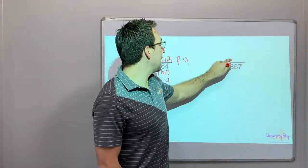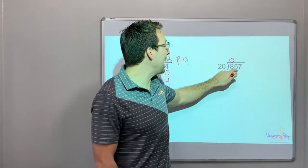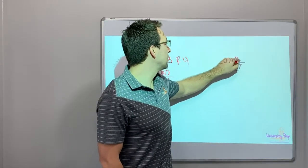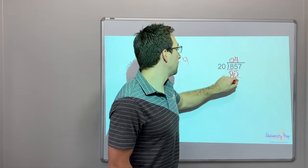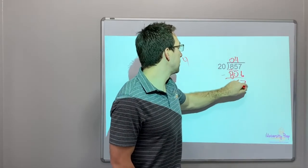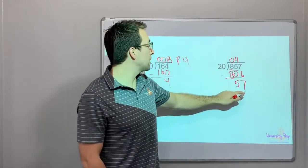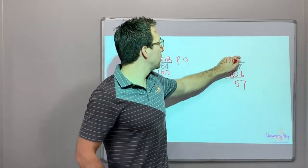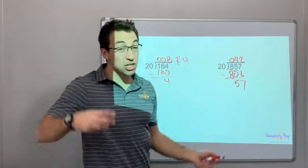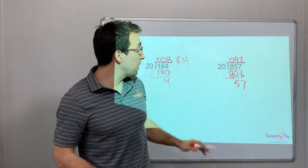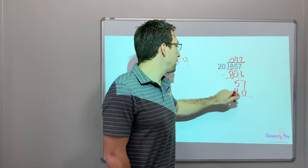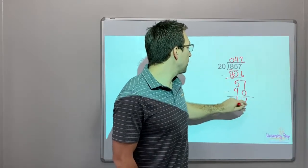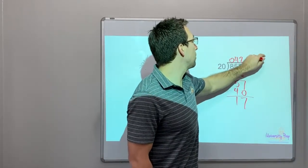20 goes into 8, 0 times. 20 goes into 80, 4 times. 4 times 20 is 80. So we'll be 57. 20 times 2, because 20 times 3 is 60 and 60 is bigger, so we can't do it. So 20 times 2 is 40. 57 minus 40 is 17. So it's 42 remainder 17.